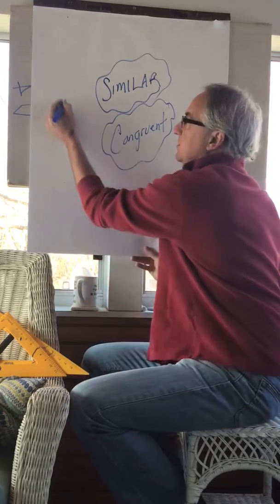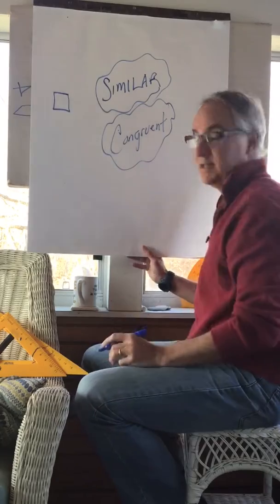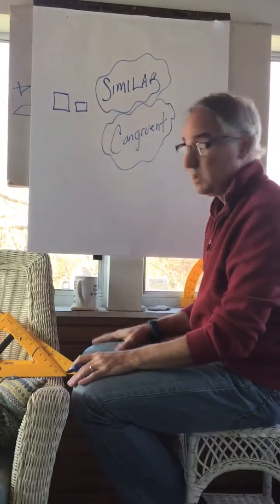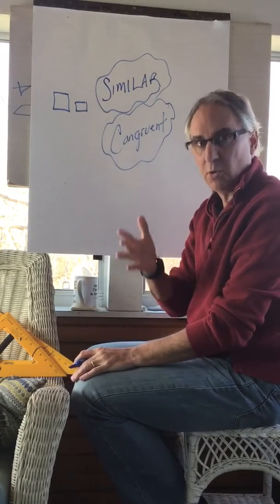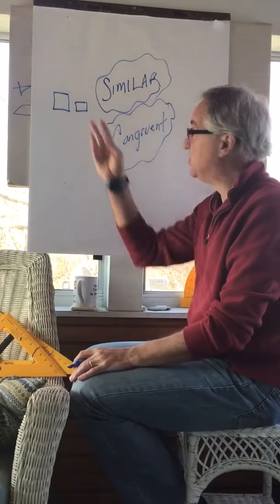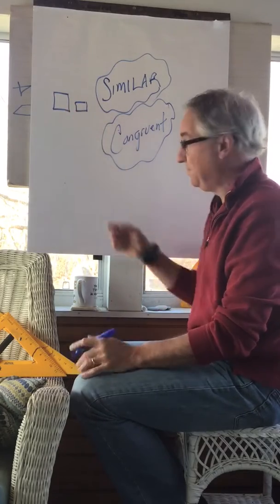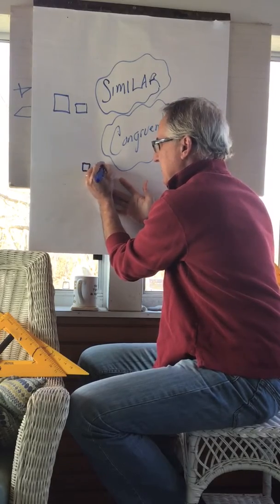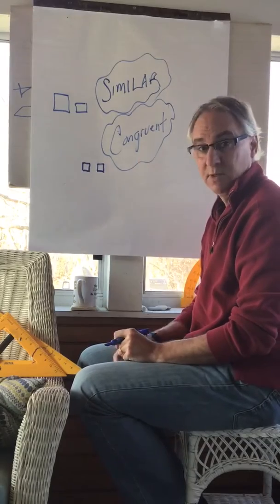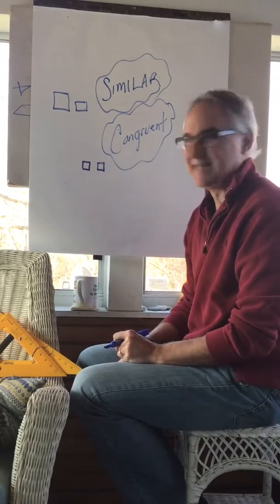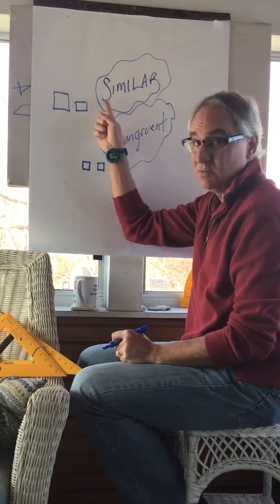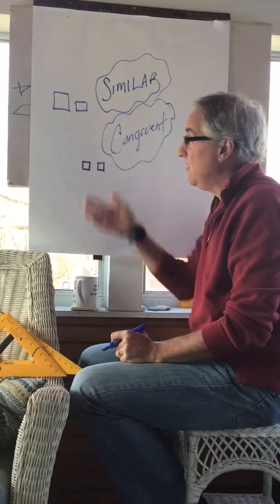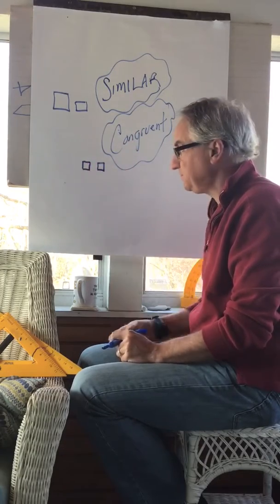Similar figures, pretend that's a good square, pretend that's a good square. Those figures are similar, they're both squares. They're similar, they're not exactly the same. If two figures are exactly the same, they're congruent. Congruent, exactly the same. Similar, no, they're similar. They kind of like each other but they're not exactly the same. Okay, that's something we're going to be talking about tomorrow a little bit.